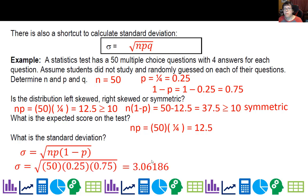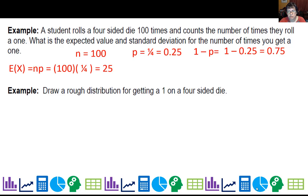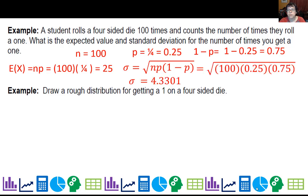Another example: a student rolls a four-sided die 100 times and counts the number of ones. The expected value is n times p, which is 25. The standard deviation is the square root of n times p times (1-p), about 4.33. The distribution is centered about 25 and about 24-25 wide.